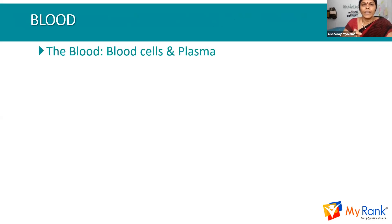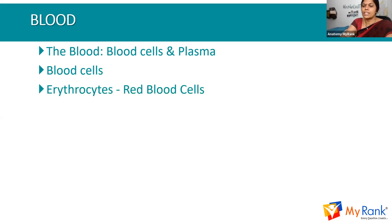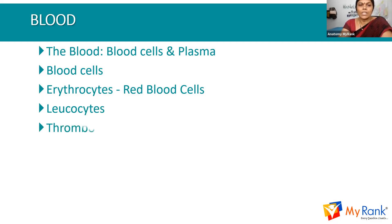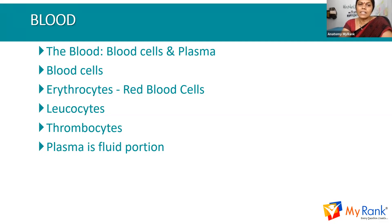Blood is mainly consisting of blood cells and plasma. The blood cells are erythrocytes, leukocytes, and thrombocytes. Leukocytes are divided into granulocytes and agranulocytes. Granulocytes include eosinophils, neutrophils, and basophils. Plasma is the fluid portion. So erythrocytes, leukocytes, thrombocytes, and plasma — these are all the main components of the blood.